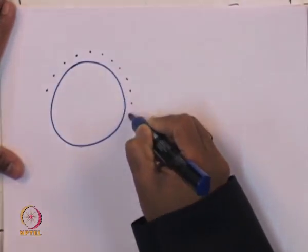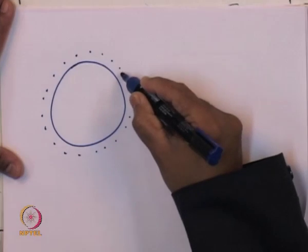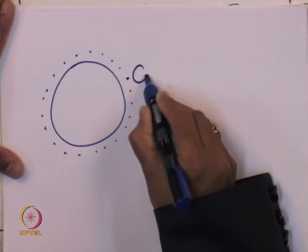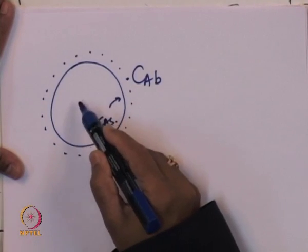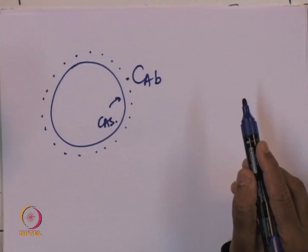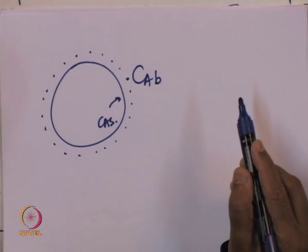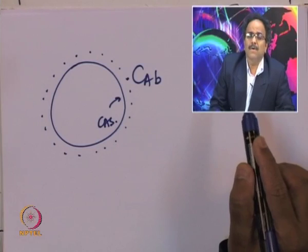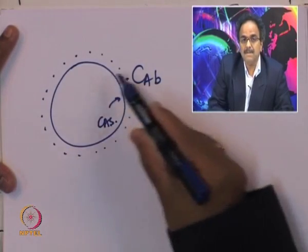Good morning. In the last lecture we looked at how to incorporate the effect of external mass transfer. We're talking about a catalyst particle — there is a hypothetical film surrounding it, and the concentration varies inside the film. Outside the film the concentration is the bulk concentration; at the surface it's CAS; and inside the particle you have the reaction taking place, with the effectiveness factor potentially substantially lower than 1.